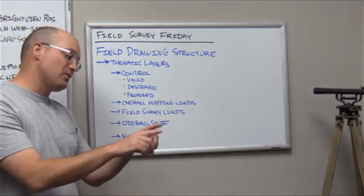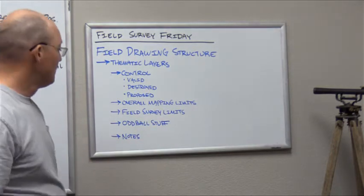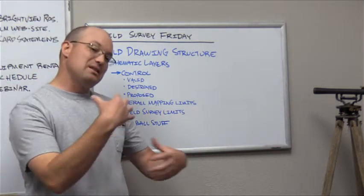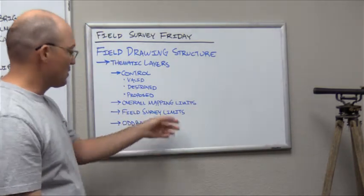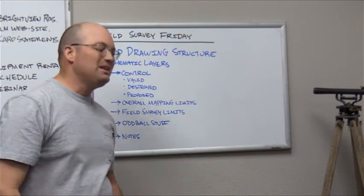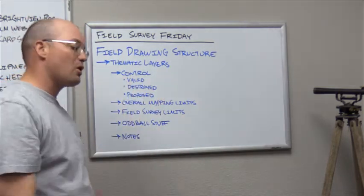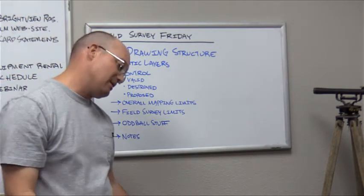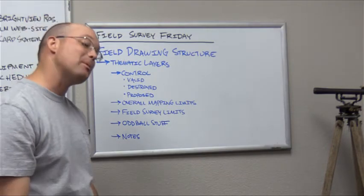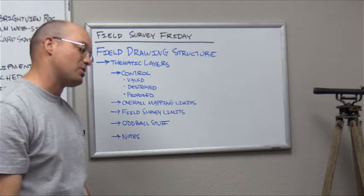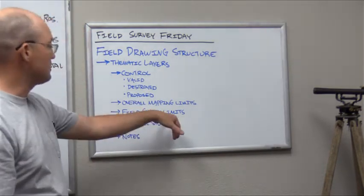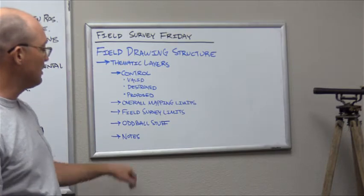I also like to show the limits of each field survey — as the crews go out and take down different chunks of the work, I try to show a geographic footprint. You can't always do that if a field crew is running all over the job, but most of the time, especially on mapping projects rather than construction projects, you can show the progression of field surveys with a geographic footprint.